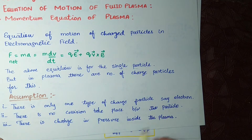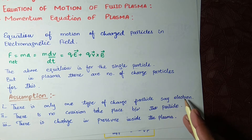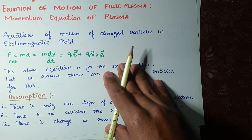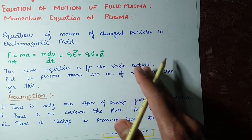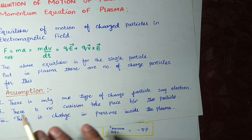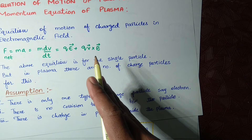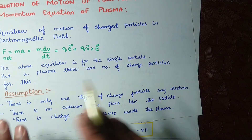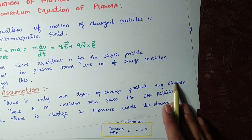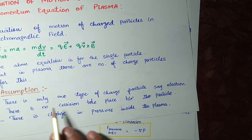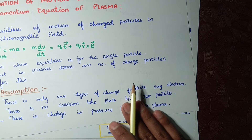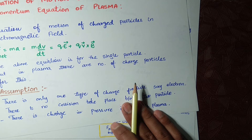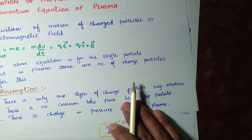Our first assumption is that there is only one type of charged particle, say electrons. We know that plasma is an ionized form of gas containing ions and electrons — positive charges and negative charges. We are neglecting the positive charges, as we did in previous lectures using a crude model, and assuming only one type of charge particle: the electron. Also, from our first chapter on the criteria for plasma, we discussed that collisions must be negligible.